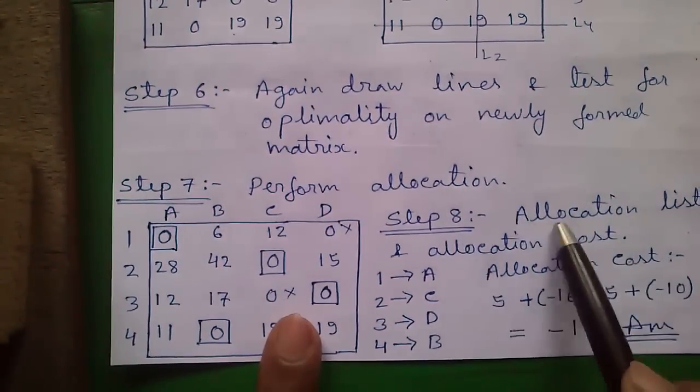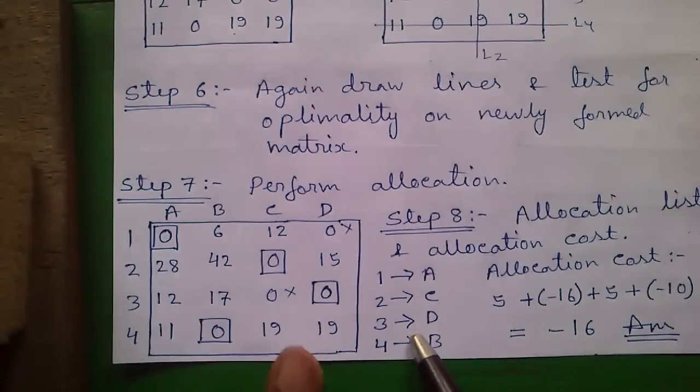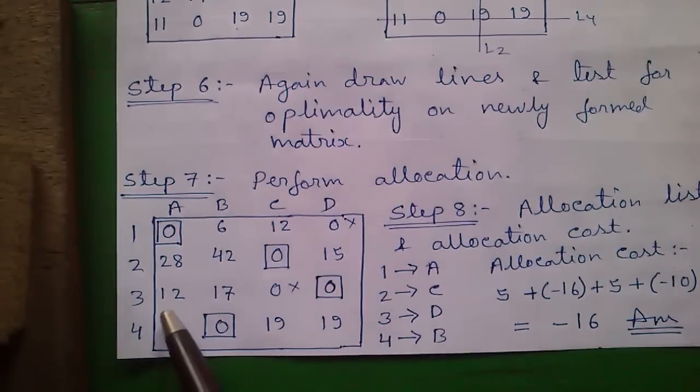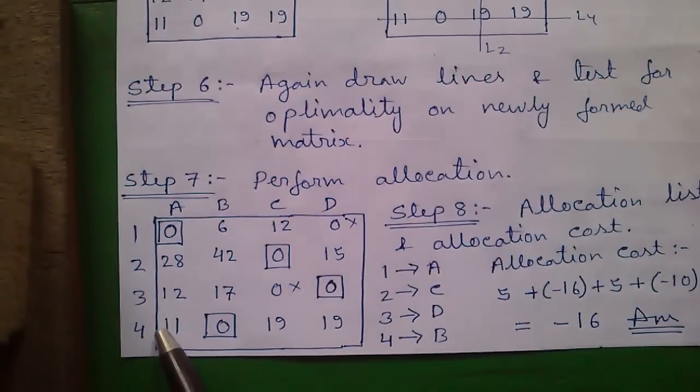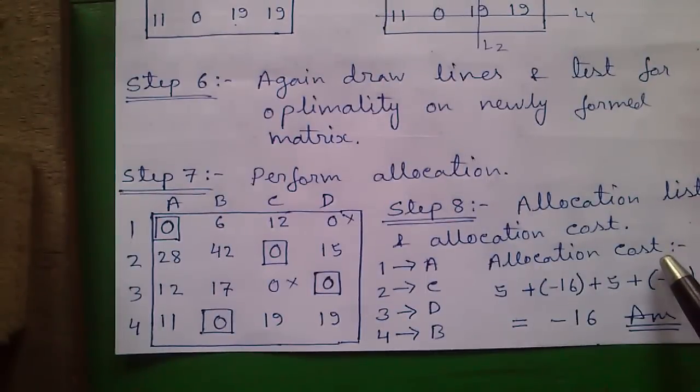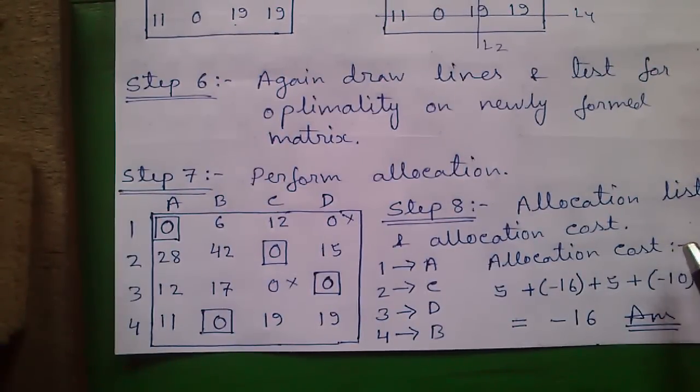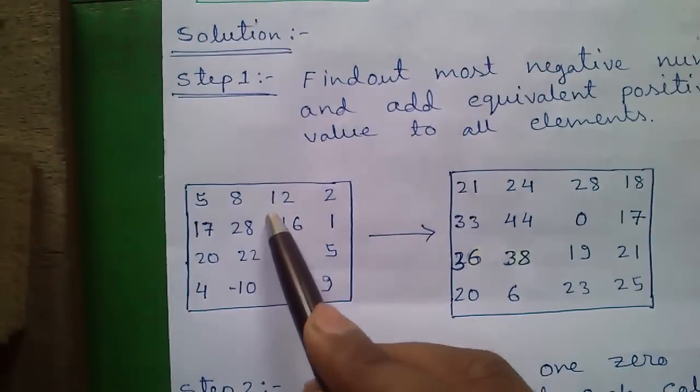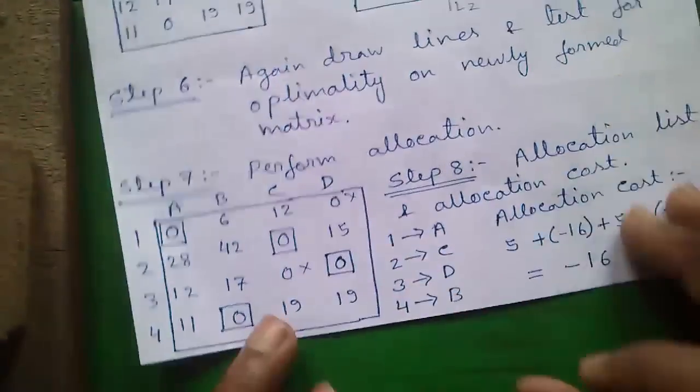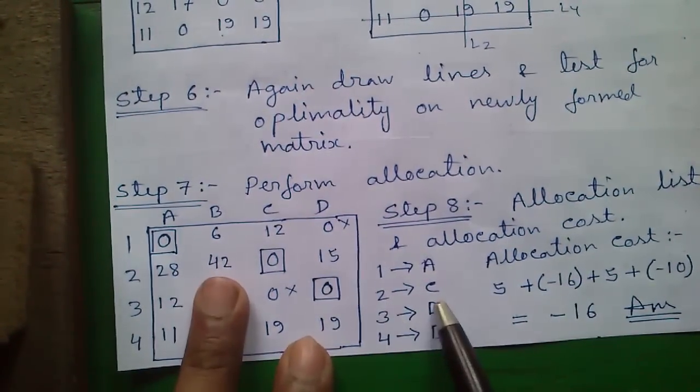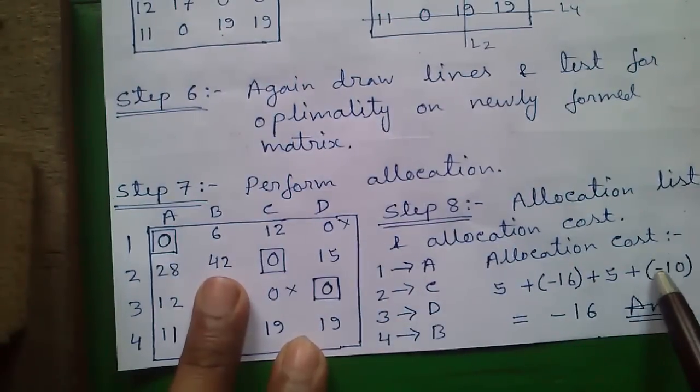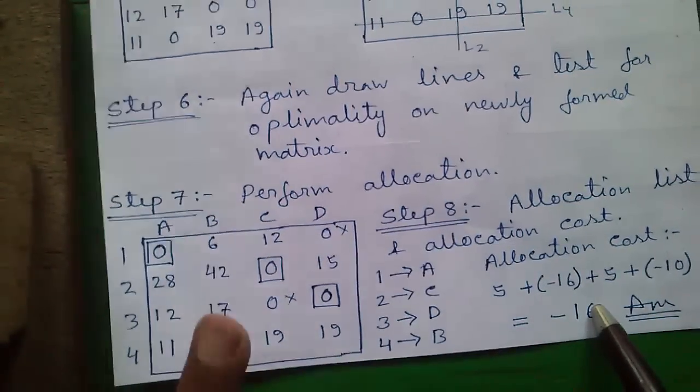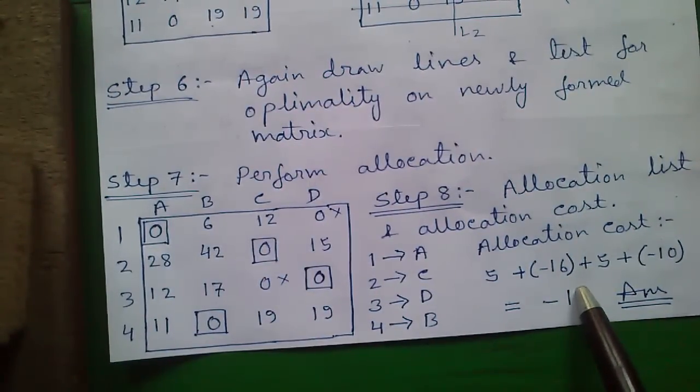Step 8: Produce the allocation list and the allocation cost. Allocation list is simple. 1 is assigned to A, 2 is assigned to C, 3 is assigned to D, and 4 is assigned to B. Next, the allocation cost is given with respect to our original matrix. In 1A position we had the value 5. In 2C position we had the value minus 16. In 3D position we had 5, and 4B position we had minus 10. Adding all the respective values you will get the allocation cost of minus 16. This is our answer.